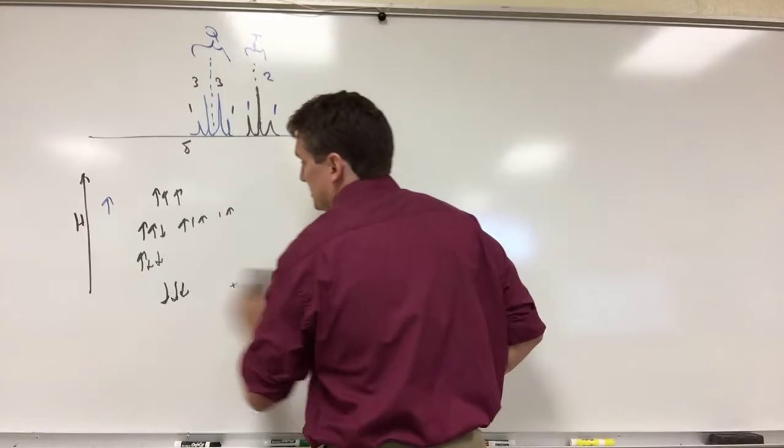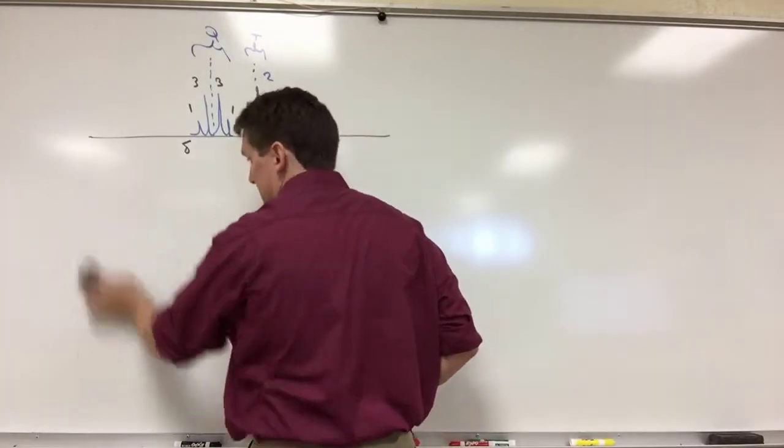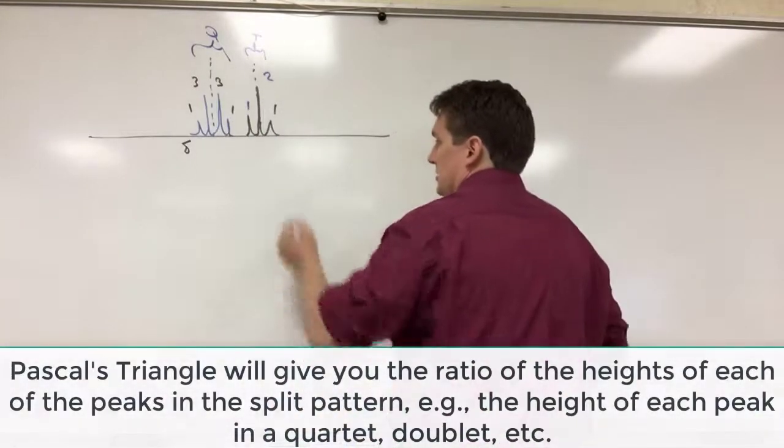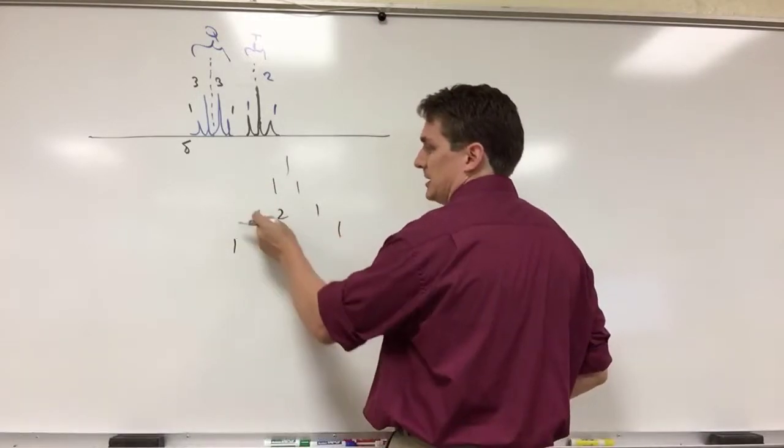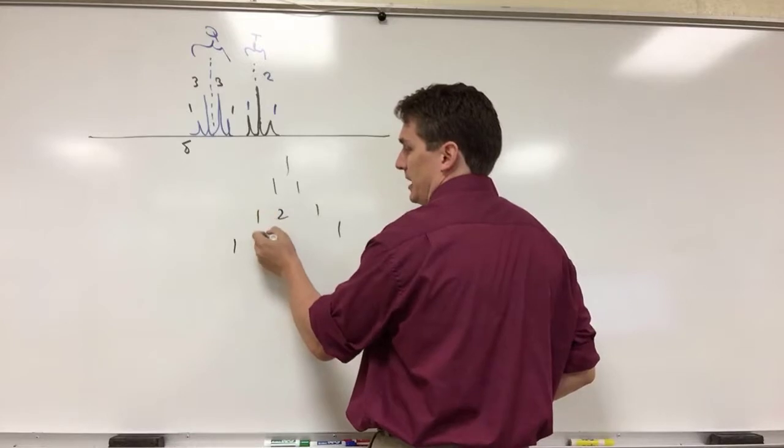So how do we predict this, and how do we interpret this? Well, we're going to use Pascal's triangle. So Pascal's triangle is taken by adding a one to each side, and then looking at the sum between two adjacent numbers. This would be three and three.